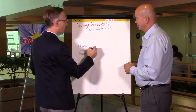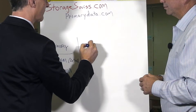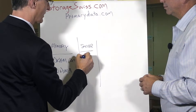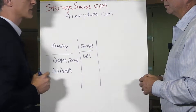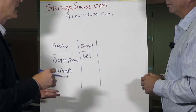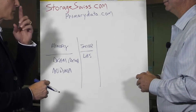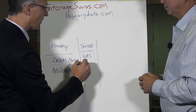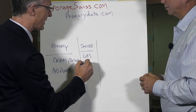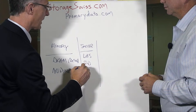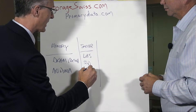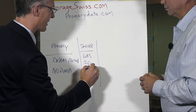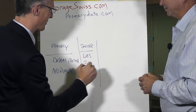The next tier would be server-attached. We all know this as direct-attached storage — an SSD, an NVMe drive. We're starting to see stuff like that, and when they implement it, it still looks like direct-attached but it's got more performance. NVMe.